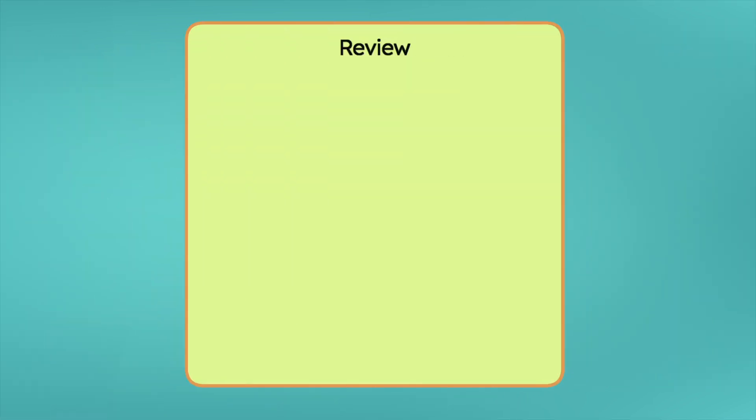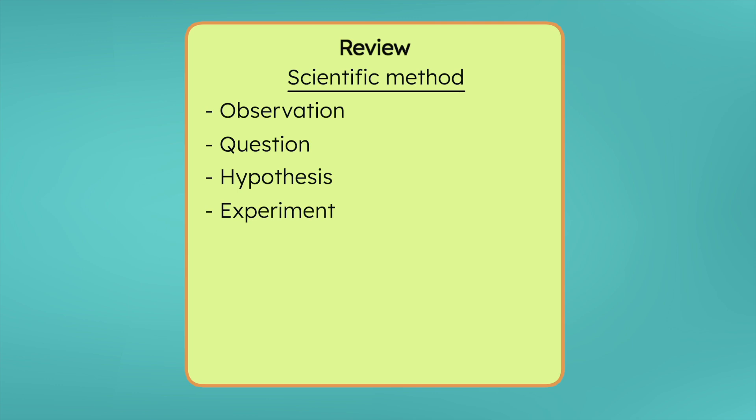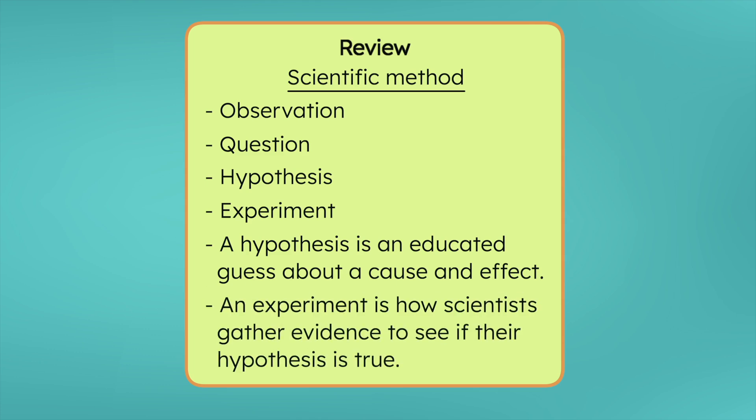Great work, detectives. I mean, scientists. Let's review everything we've learned today. After making an observation and asking a question, the next steps of the scientific method are to make a hypothesis and run an experiment. A hypothesis is an educated guess about a cause and effect. And an experiment is how scientists gather evidence to see if their hypothesis is true.